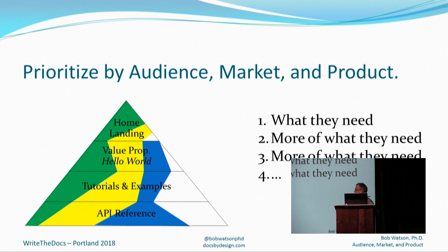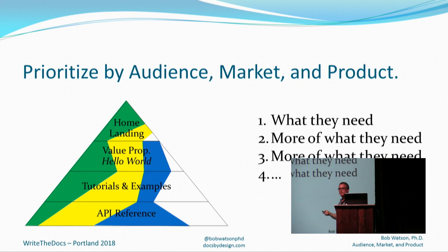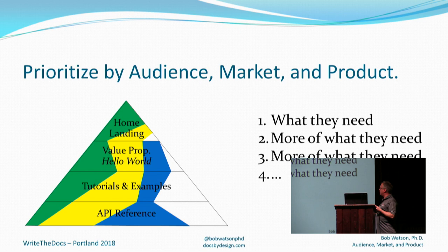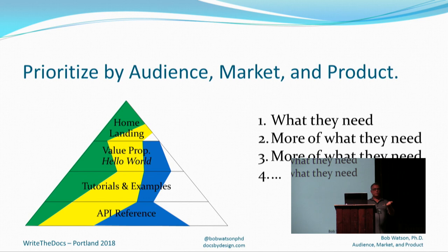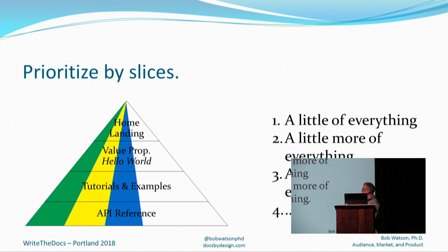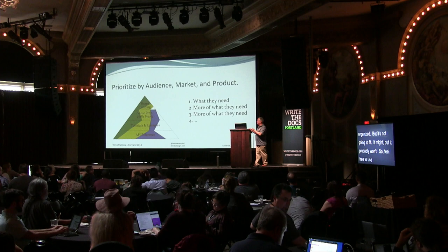What I've seen looks more like this: in the first half, you might have a lot of emphasis on the home page and value proposition because you need to make an impression, with enough tutorials and reference content to support that. Then the next time your home page is okay, you just need a little more value proposition and another demo, and so on. Give yourself permission to have a plan that looks messy, because the important thing is that it fits your market, audience, and product.